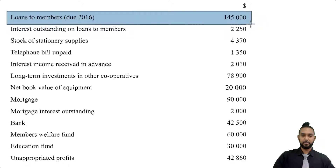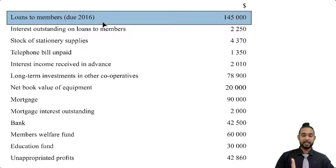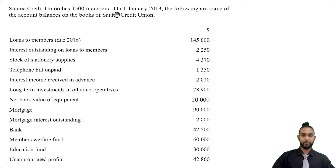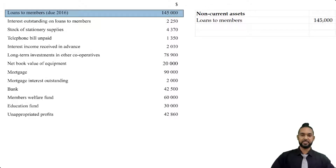If we look, we have loans to members due 2016. A credit union is a financial institution, and financial institutions like credit unions and banks make money by lending money, and of course people have to pay them back. So the loans that this company makes are actually assets. If you look at the due date, it says 2016, and the balance date is 1 Jan 2013, so 2016 is definitely more than one year away. So loans to members is a non-current asset — that's the first item in our list.